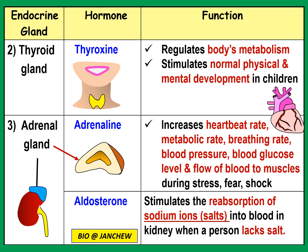Now let's continue with the thyroid gland. The thyroid gland is situated in the neck region, near the vocal cords and on the trachea. It secretes only one hormone, but that hormone is very important for health — it's called thyroxine. The thyroid gland is stimulated by TSH from the pituitary gland, which then causes it to secrete thyroxine. Thyroxine regulates the body's metabolism — for example, it regulates the rate of respiration. The more thyroxine produced, the higher the rate of respiration and the more energy and heat produced.